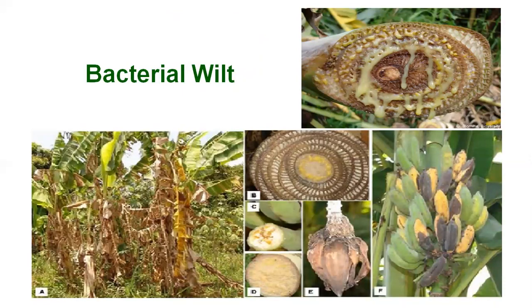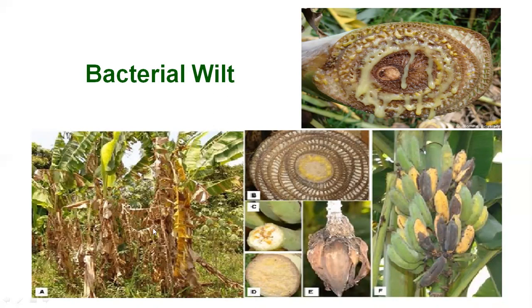The second disease is bacterial wilt. The causal organism is Xanthomonas campestris pv. musacearum. We have seen the Panama wilt which is a fungal wilt caused by Fusarium, and here we are seeing the bacterial wilt caused by Xanthomonas. Xanthomonas bacteria also originate from the soil to cause systemic infection. Externally, the same symptoms can be seen in both Panama wilt and bacterial wilt — chlorosis of the leaves, drying of the leaves, and within a short duration, the plant undergoes heavy wilting.